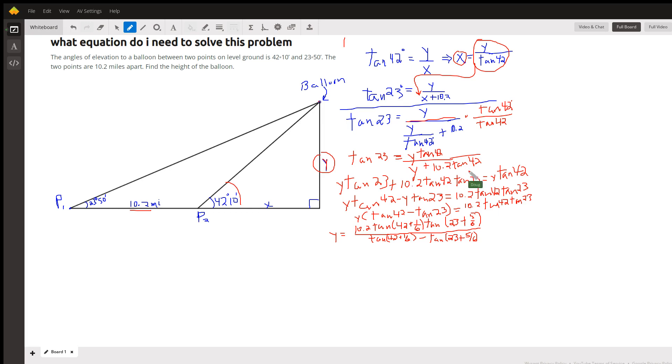And now, I will multiply both sides by this denominator right here to get Y tangent 23 plus 10.2 times the tangent of 42 times the tangent of 23 equals Y tangent 42.